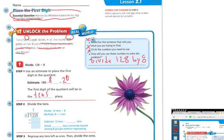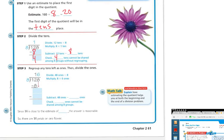So if I'm dividing the tens, I divide 12 tens by 8. That means I'm going to multiply 8 by 1 ten, which is 8. Then 12 minus 8 is 4. So I have 12 tens minus 8 tens, and I get 4 tens that cannot be shared amongst the 8 groups without regrouping — so 4 left over.